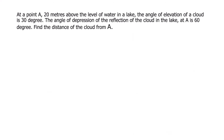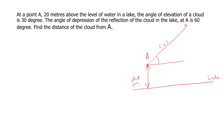This is also a repeatedly asked question. At a point A, 20 meters above the level of water in a lake, the angle of elevation of a cloud is 30 degrees. Angle of elevation means looking upward — the line of sight makes 30 degrees with the horizontal level.